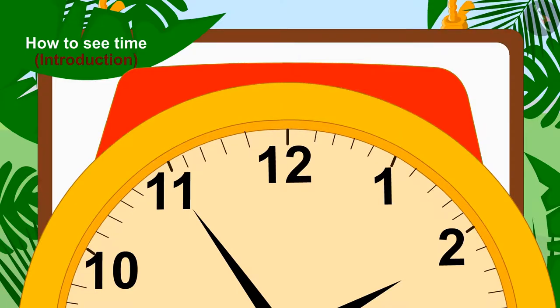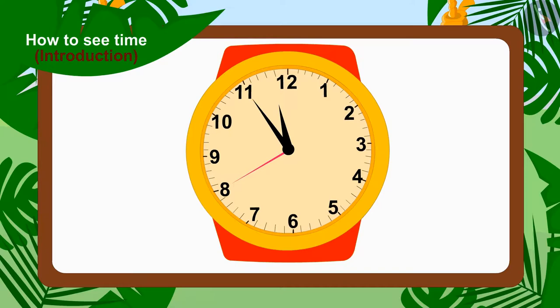And if you look closely, you will find that there are 4 small lines in each part. In this way, every short line is equal to 1 minute. Let us see how we can tell the time in this watch.